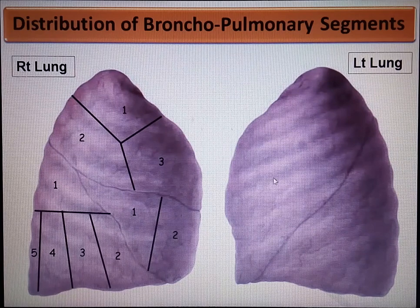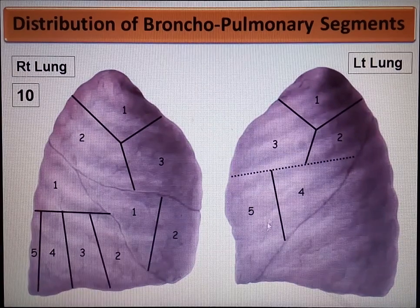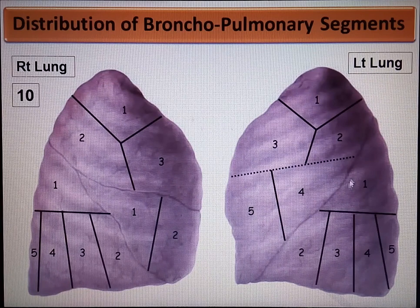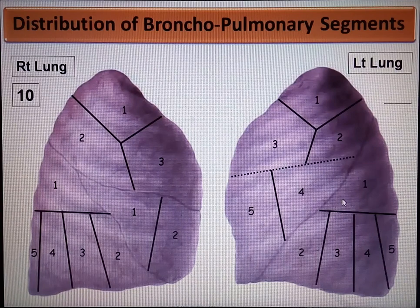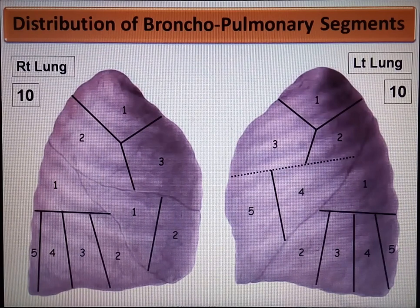Now let's see the left lung. The upper lobe gives rise to five bronchopulmonary segments, here is their arrangement. The lower lobe has five more bronchopulmonary segments and their arrangement. In total, ten bronchopulmonary segments are seen in each lung, and this is the way they are arranged.